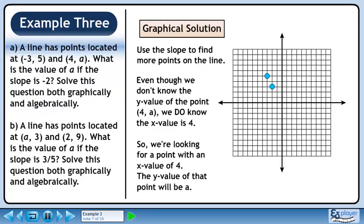Follow the slope down 2 and right 1 to get another point on the line. The x-value of this point is -2, but we need a point with an x-value of 4. Let's keep going. If we follow the slope again, we get a point with an x-value of -1. This still isn't the point we're looking for.